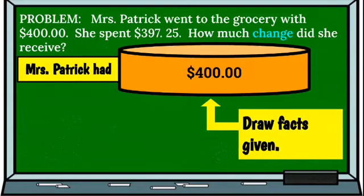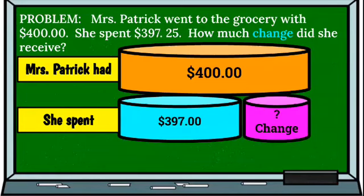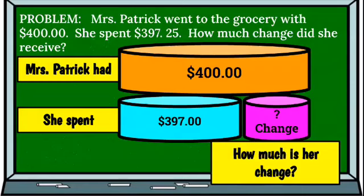Now we're going to draw our facts. So here we have Mrs. Patrick, how much she started with. She had $400. She spent $397.25 from that $400 she started with. So we want to find out how much is her change. So we have drawn the information.